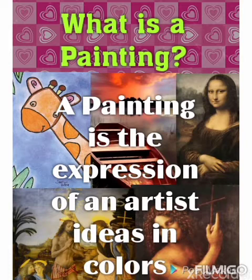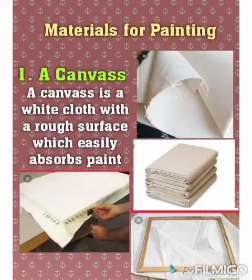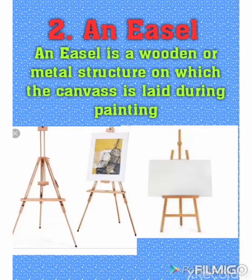The materials for painting include: number one, a canvas. A canvas is a white cloth with a rough surface which easily absorbs paint. It is the surface on which an artist does their painting. You should also know that paper, a wall, and a wooden slab are also painting surfaces, but a canvas is the professional material. A canvas is basically a cloth material with a rough surface, usually stretched over a wooden frame and tacked down with tack pins or staples.